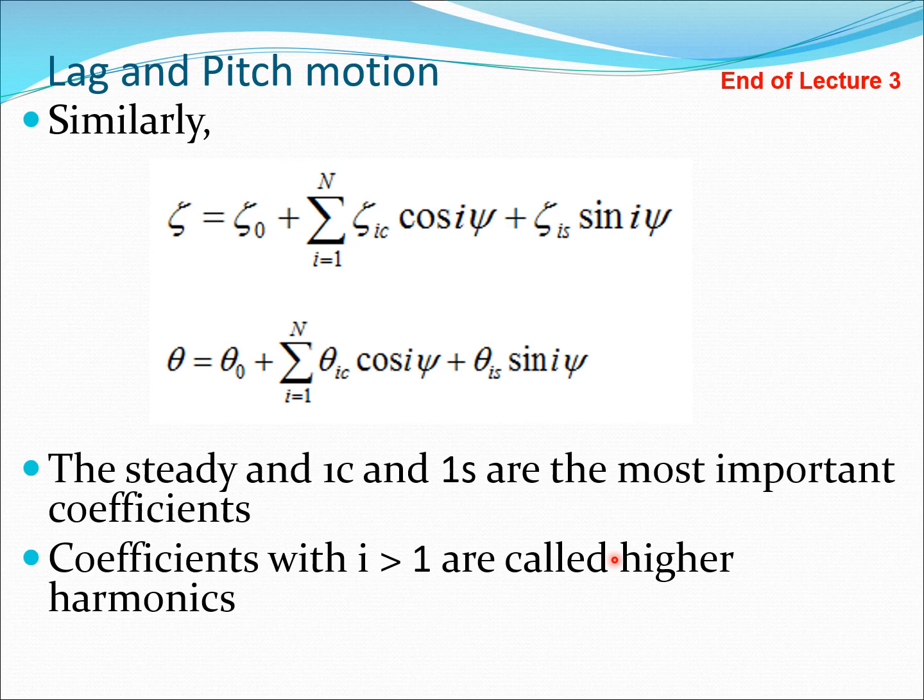There is a phenomenon called higher harmonic control where you could use theta 2c, 2s, 3c, 3s, and so on. These would typically be provided by a controller to remove or mitigate vibration. In a typical helicopter, theta would be theta zero plus theta 1c cos psi plus theta 1s sine psi. This is the collective, and these are known as the lateral and longitudinal cyclic. We'll discuss those in detail later. So I will end my lecture here. We will meet again in our next lecture.